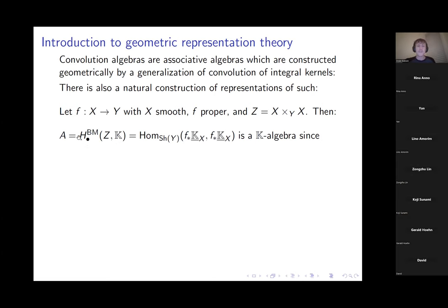There's a more concrete way to see this: there's a natural correspondence involving the triple fiber product of X over Y. This space has three projections — to the first two factors, the last two factors, or the first and third — and pulling back along the first two and pushing forward along the last defines a multiplication map, giving an associative algebra structure.